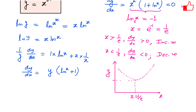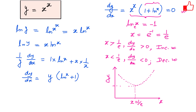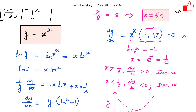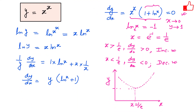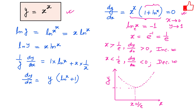At x equals 0 the value is not directly defined in the usual sense, but using the concept of limits we can prove that as x tends to 0, y tends to 1. So the function starts near y equals 1, decreases to the minimum at x equals 1 over e, and then increases.